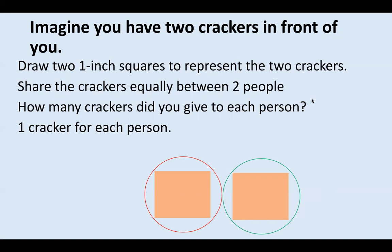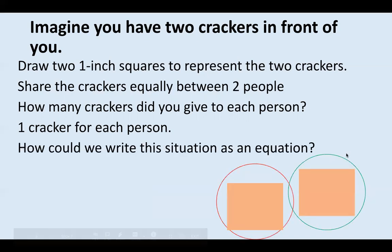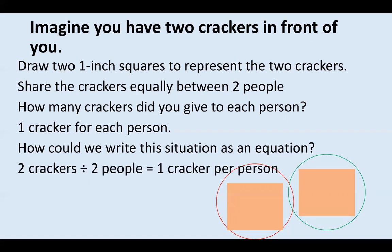One cracker, right? Person number one got the red circled cracker and person number two got the green circled cracker. Pretty straightforward. But how can we write this situation as a math equation? Write down your guess in your journal right now — what equation represents what we just did? Two crackers divided by two people equals one cracker per person, which is basically two divided by two equals one.